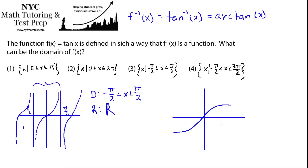So in order to make sure that it is a function, or as this problem states, this should be such, by the way, in order for it to be defined in such a way that the inverse of f of x, in other words, the arctan, is a function, we have to make sure that we limit it to only one iteration.